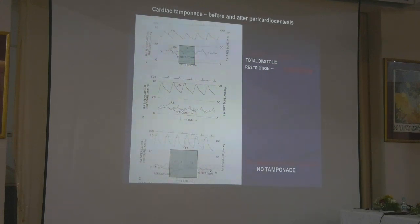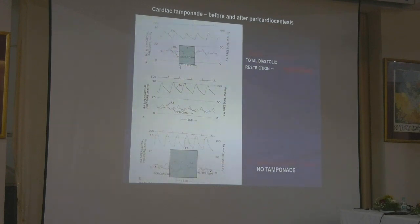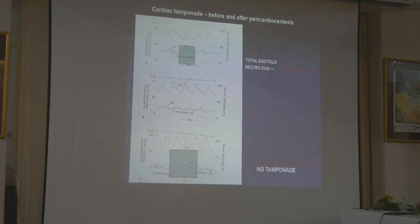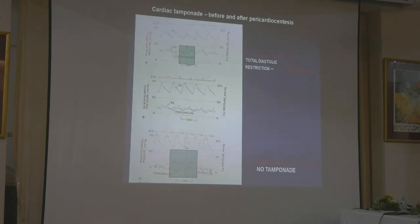Once you do pericardiocentesis — in this patient with tamponade where the RA pressure is very high, and there is a catheter in the pericardium also equally high — when you are doing pericardiocentesis, you can actually see the Y' descent coming back. The double descent is seen and the Y' descent becomes prominent. So when you clinically see a Y' descent in the jugular in a patient, you know the patient is not in tamponade. In tamponade, the Y' descent will disappear.